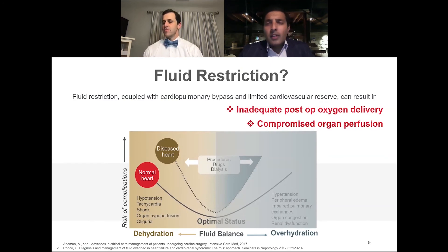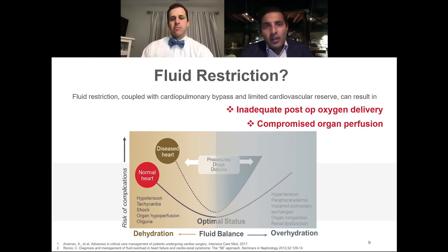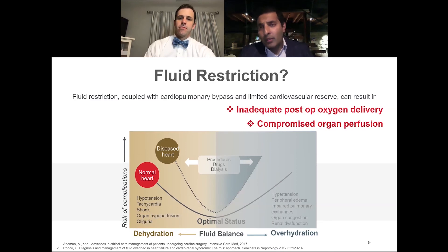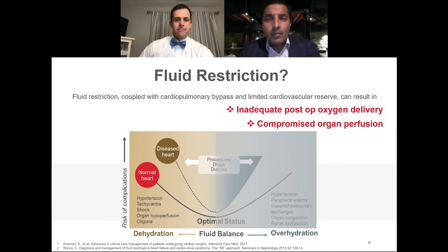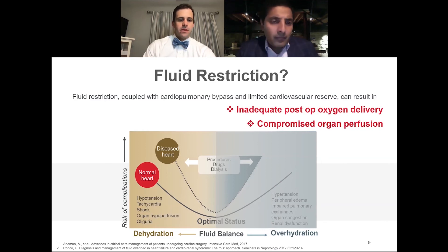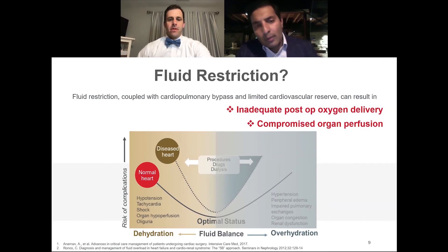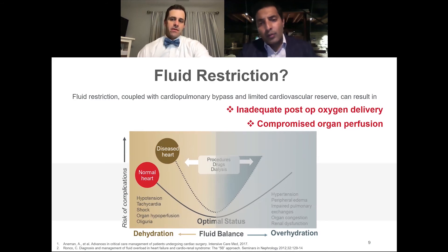One concept long popular in cardiac surgery is that you've got to run patients dry — fluid restriction. When you couple fluid restriction with limited cardiovascular reserve, meaning a poor inotropic state or a heart coming off sick, what really happens is inadequate oxygen delivery. We said earlier that oxygen delivery is the true end result of all our interventions. When you have inadequate oxygen delivery, you end up with compromised organ perfusion. This graph shows the risk of complications — organ hypoperfusion, kidney injury, tachycardia — when you run people too dry versus when you optimize.